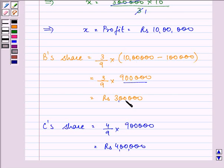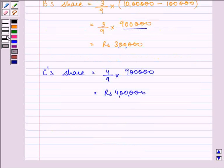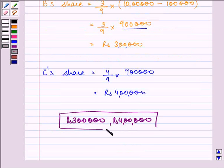The answer to the question is B is earning 3 lakh, whereas C is earning 4 lakh in all. This completes the session. Hope you understood it well and enjoyed it too. Have a nice day.